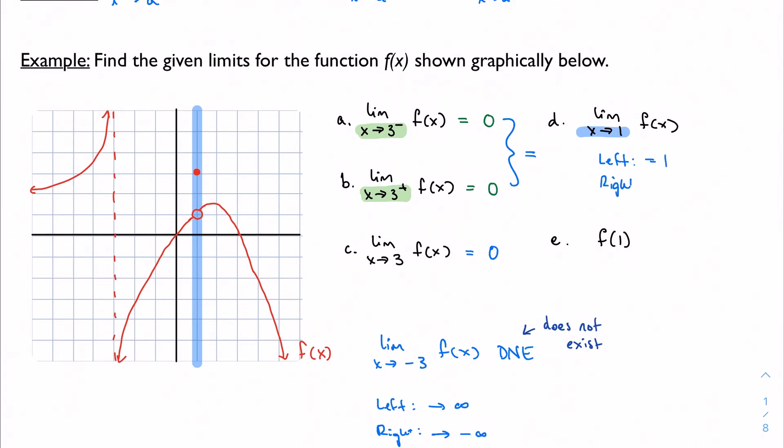From the right, we notice the same thing - it also approaches 1. So my limit overall, because both sides are equal, is 1. But the function value is not 1. Here is my function value - it's 3.